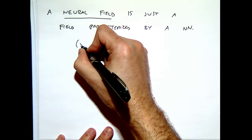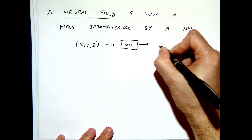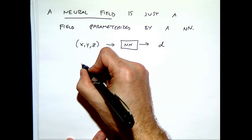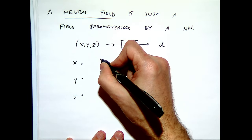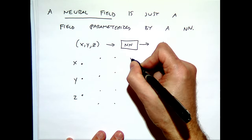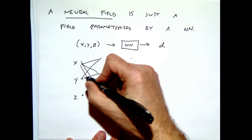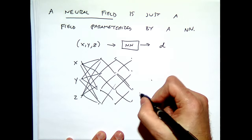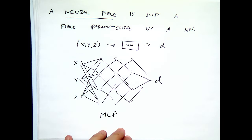For example, I could take an input spatial location, pass it through a complicated neural network, and get a number that could be the value of a signed distance function. I could have a fully connected MLP that outputs D — the distance. NERF, the neural radiance field, is kind of like this, except the input and output are both a little different. It's not just a space coordinate coming in and some function value coming out.